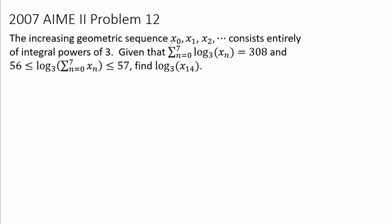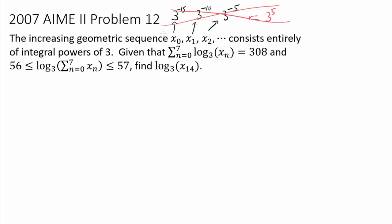The increasing geometric sequence x0, x1, x2, and so on consists entirely of integer powers of 3. So we know x0 can be written as 3 to some integer power, like negative 15. And we know this is a geometric sequence, so x1 may be 3 to the negative 10, x2 may be 3 to the negative 5, and so on. In this case, the common ratio is 3 to the fifth. This is just an example to make sure we know what's going on.